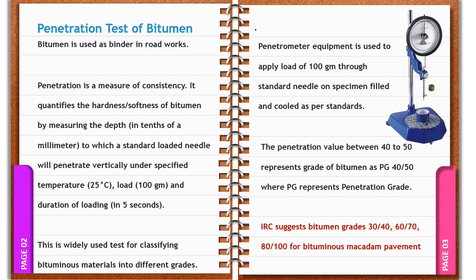As per the IS code guidelines, a weight of 100 grams is applied on a needle which is allowed to penetrate a standard filled, specifically air-cooled and water-cooled bitumen sample for a duration of 5 seconds at a standard temperature of 25 degrees Celsius. The penetration test is widely used for classifying the bituminous material into different grades.